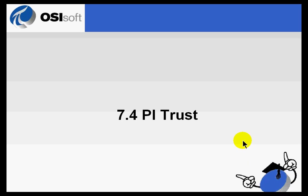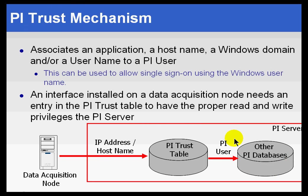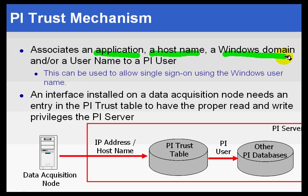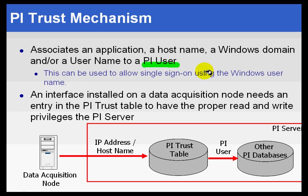Section 7.4: PyTrust. PyTrust is an entry in a table called the PyTrust table that associates a specific application or hostname, or a Windows domain or Windows user that is trying to connect. It associates an incoming connection — identified by application name, hostname, Windows domain, or Windows user — with a specific PyUser.